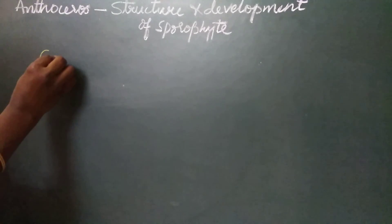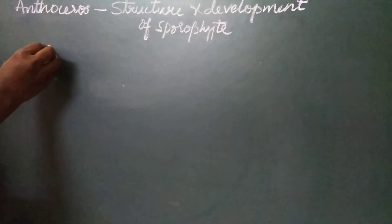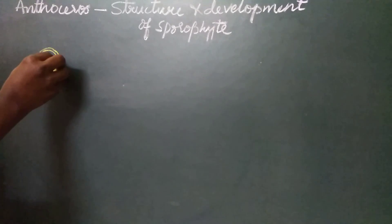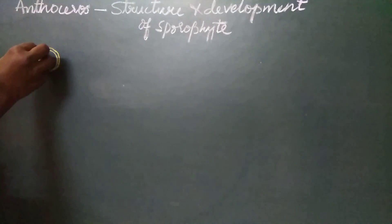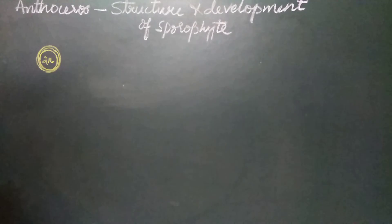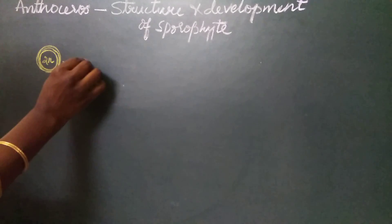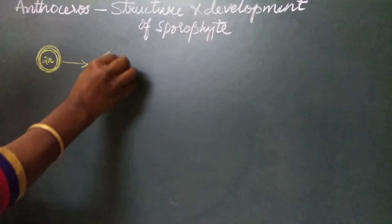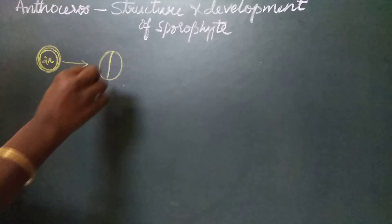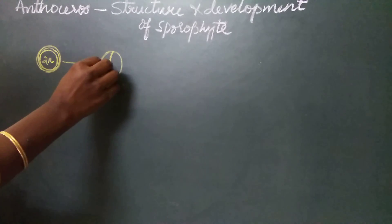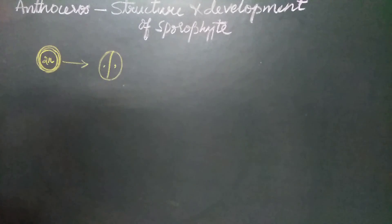The development of sporophyte. The single zygotic cell, which is diploid in nature, secretes a cellulosic wall around it and protects itself when it is in the stage of development. The first division in the zygotic cell is a vertical oblique division. These divisions differ in different species of Anthoceros.